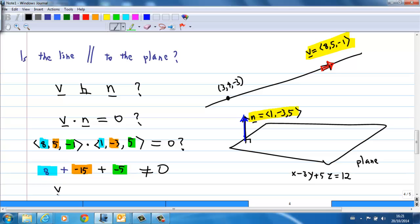That means that v is not perpendicular to n. Therefore, we know the line is not parallel to the plane.